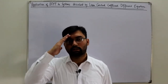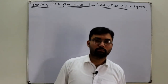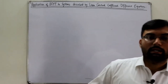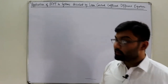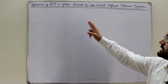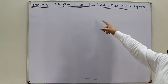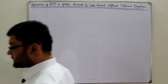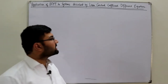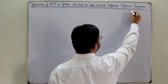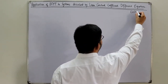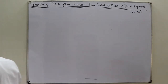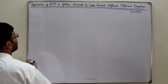Bismillah ar-Rahman ar-Rahim. Assalamu alaikum. Salah Khan here, and today we cover the final topic of the discrete time Fourier transform: the application of DTFT to systems described by linear constant coefficient difference equations, known in short as LCCDE. We represent an LTI system where the input is x(n) and the output is y(n).